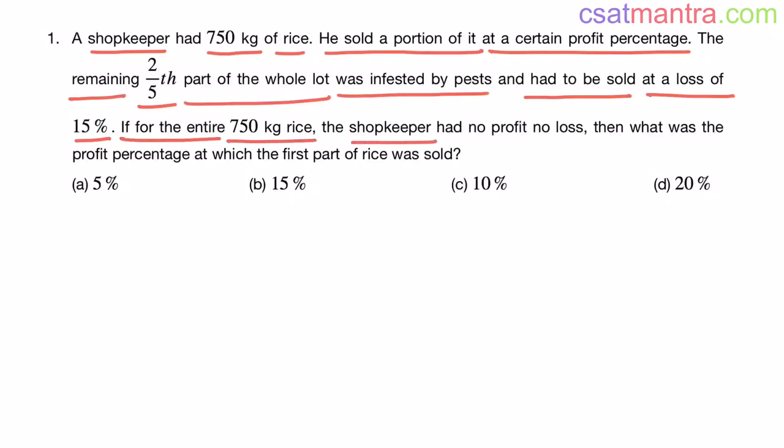If for the entire 750 kg rice, the shopkeeper had no profit, no loss, then what was the profit percentage at which the first part of the rice was sold? This question is asked by one of our students. So, thought of solving this in a daily dose.